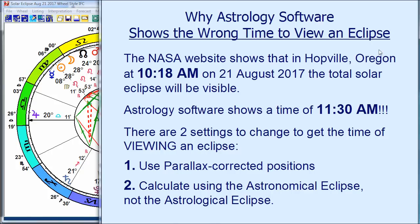There are two things going on. Number one: to get the time of the eclipse, you would have to use something called parallax-corrected positions. In astrology, we don't take account of parallax, and in order to see when the eclipse would occur, you have to use parallax-corrected positions. Another thing is there's something I call an astronomical eclipse and an astrological eclipse, and you'd want to use the astronomical eclipse. You can change these things in most programs — I'll show you how in the Sirius software, and it's the same in the Kepler program — and you'll see that we do get the 10:18 a.m.